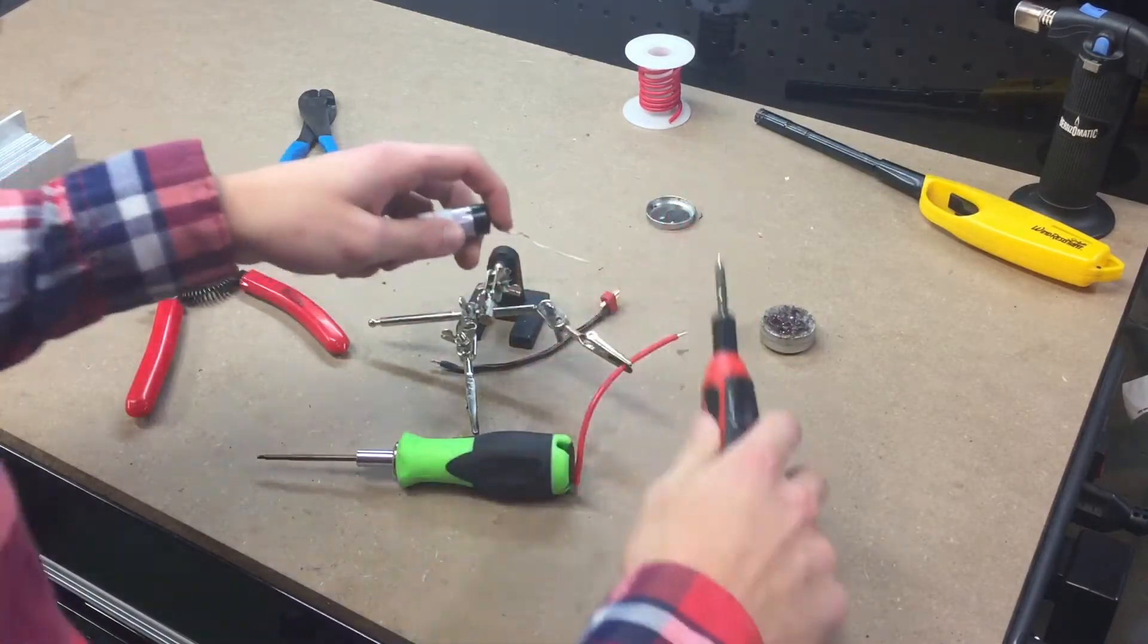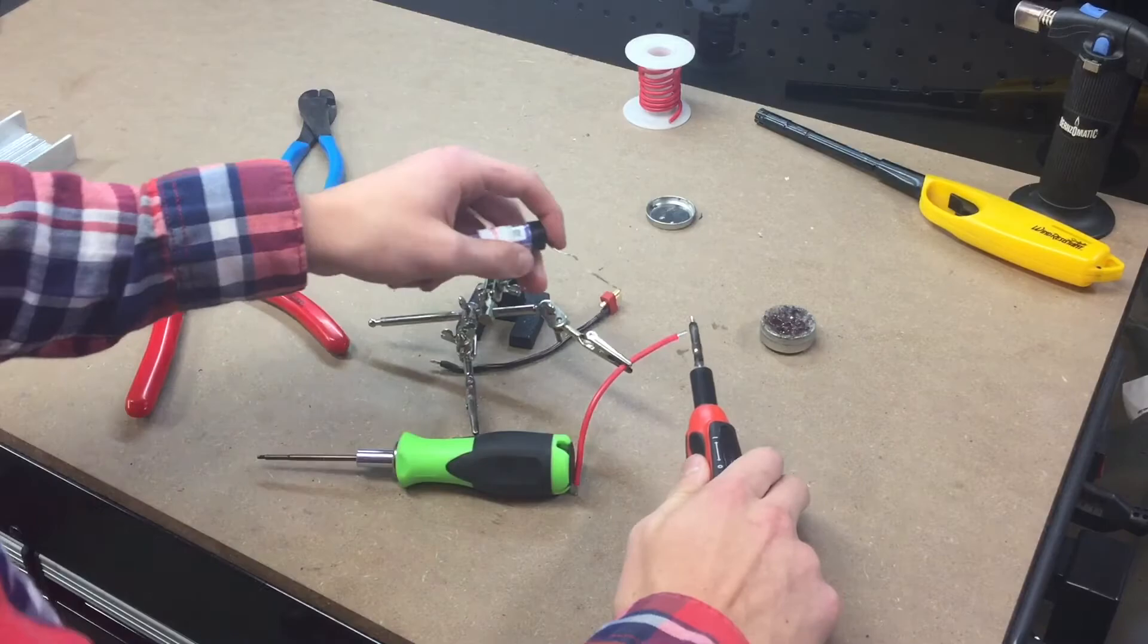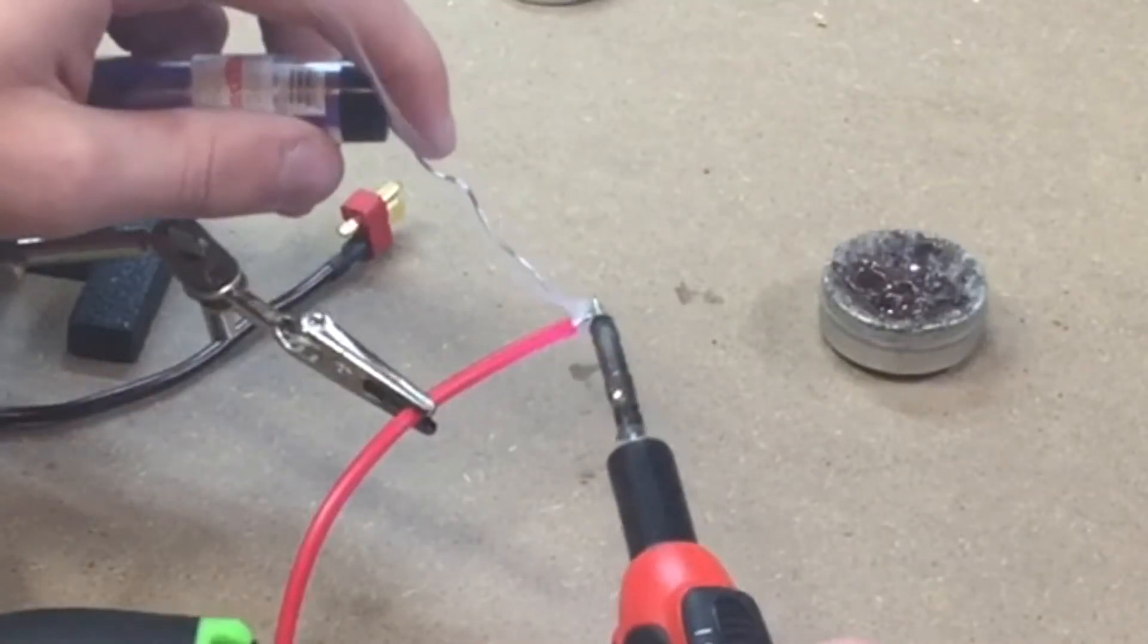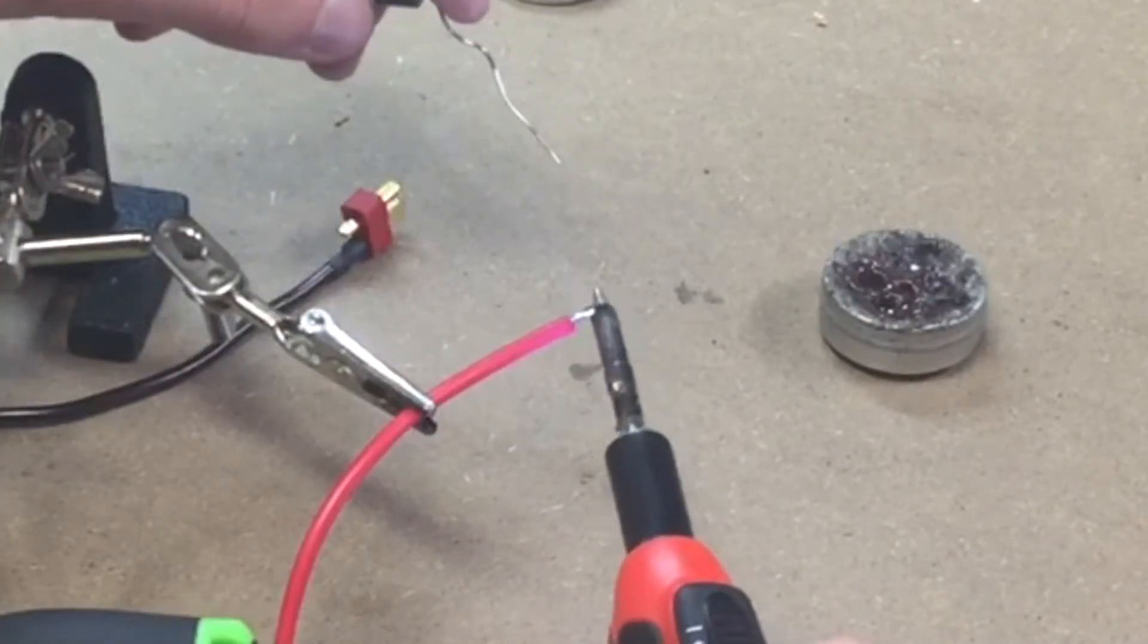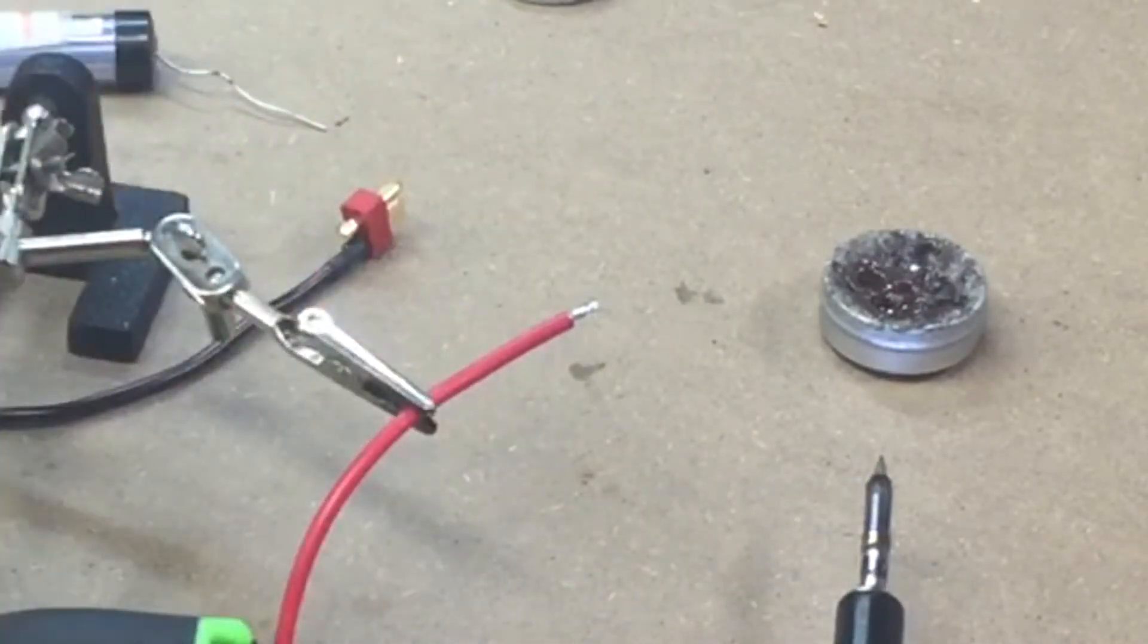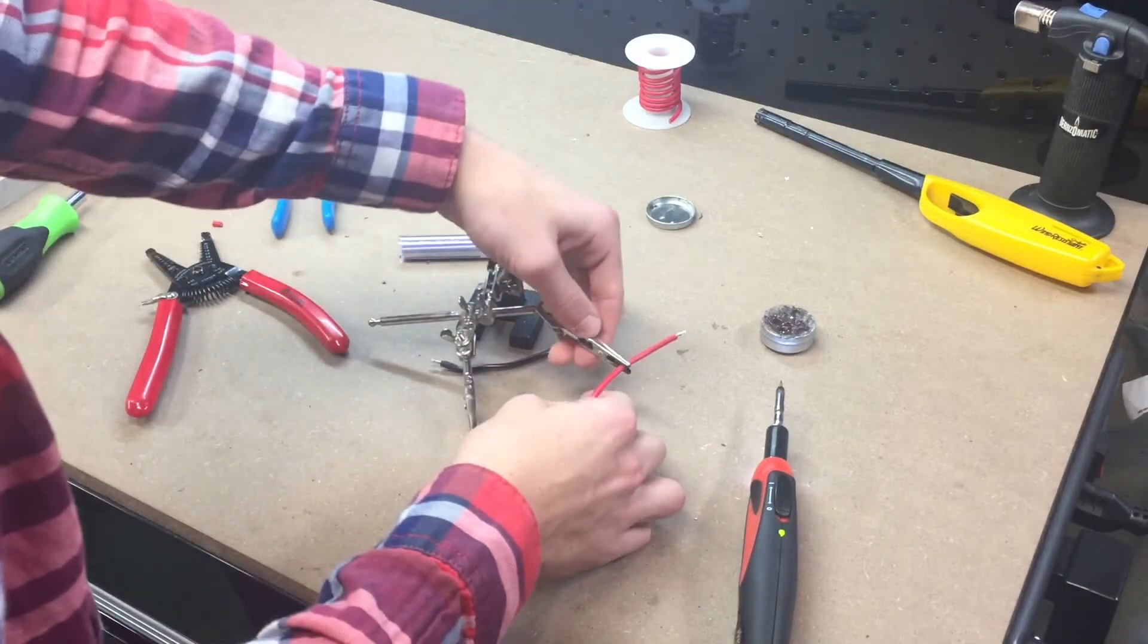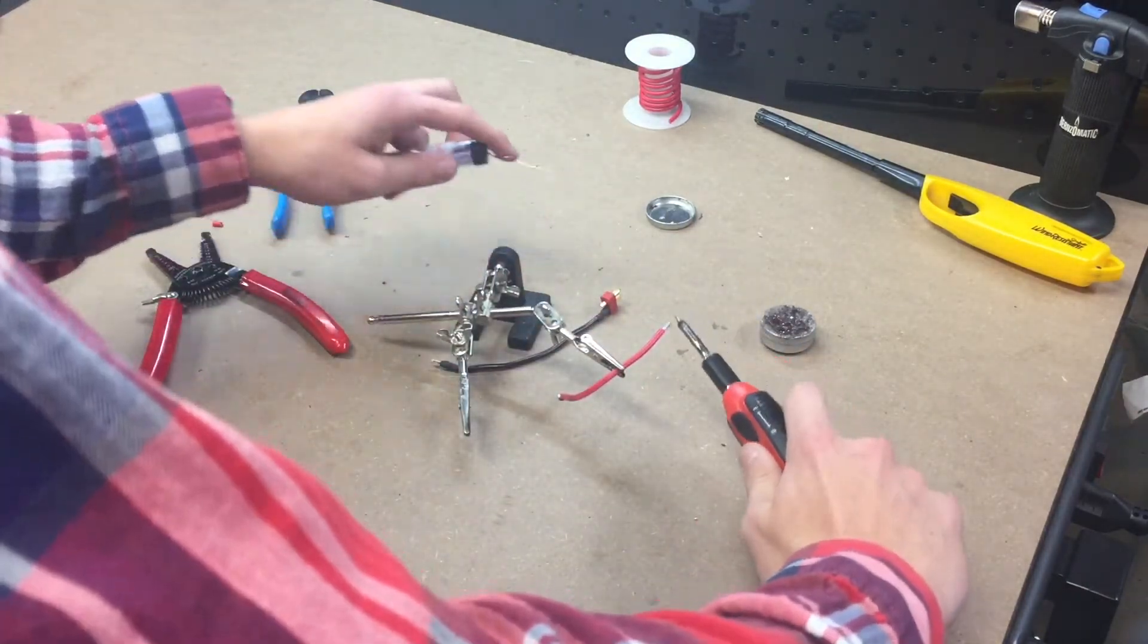So now we can go ahead and tin this wire here. All we're going to do is put a light coat of solder on it. And you want to make sure you're in a pretty well ventilated area when you're doing this. Go ahead and twist it around to the other side. Sometimes it doesn't quite get it.